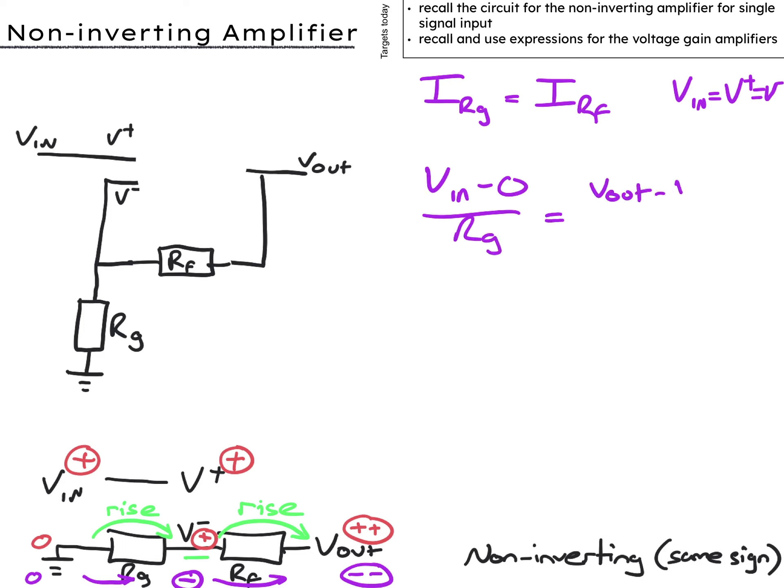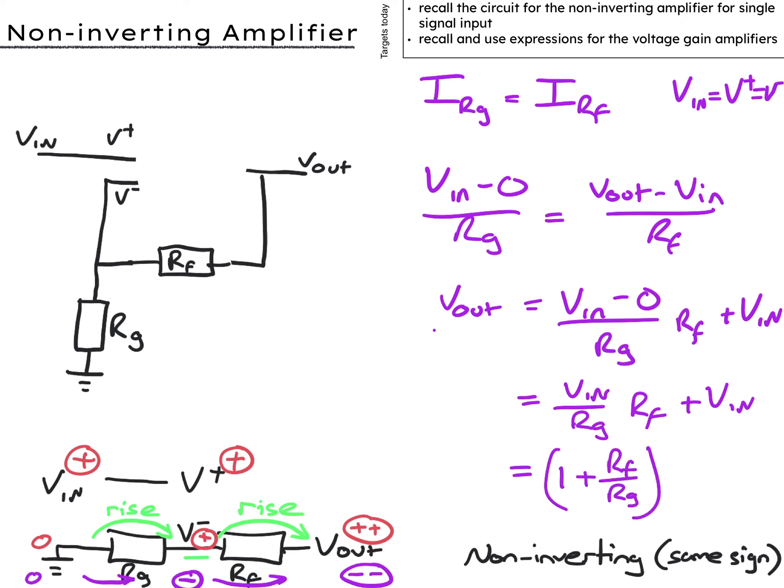Rearranging we get V_out equals V_in times Rf over Rg plus V_in or V_out equals one plus Rf over Rg times V_in.